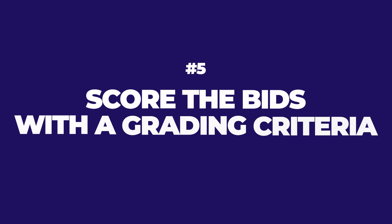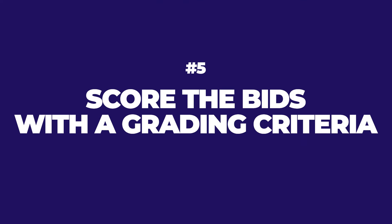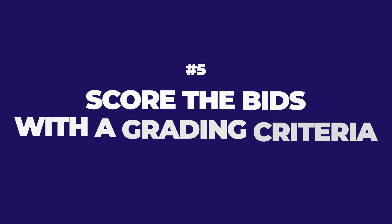Number five: score the bids with a grading criteria for each category that you pre-assign. Once you've normalized the bids and understand the criteria, go ahead and give each bid a numerical score.